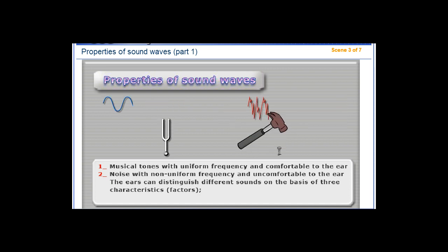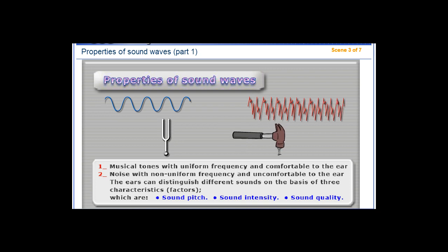The ears can distinguish different sounds on the basis of three characteristics or factors, which are sound pitch, sound intensity, and sound quality.